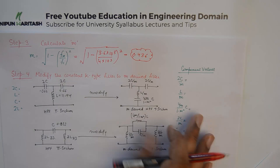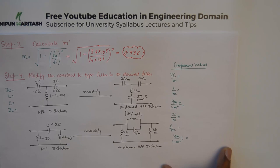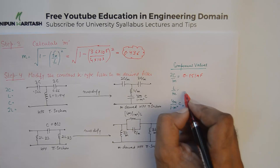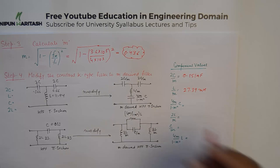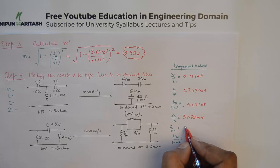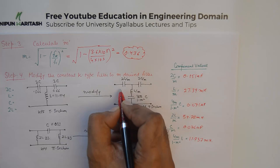So 2C/m becomes 0.071 microfarad, L/m becomes 27.39 millihenry, 2L/m is 54.78 millihenry, C/m is 0.076 microfarad, and the additional parallel element 4m/(1-m²) × L is 11.937 millihenry. These are the calculated component values for both the T and Pi sections of the m-derived high pass filter.